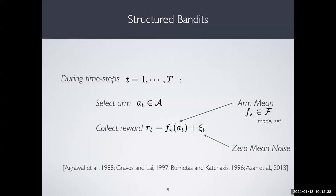This is the setting of structured bandits — structured because you have this function class structure F. At each time step, the learner selects an arm and collects a reward. There is a mean reward function which we don't know, but we know this function class F, which could be arbitrary. I'll give examples where this is linear or multi-arm bandits.